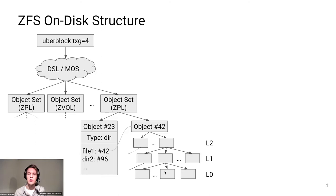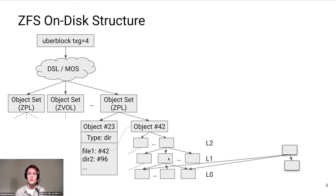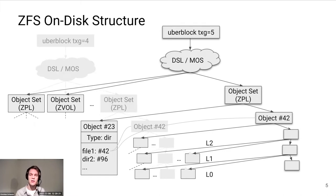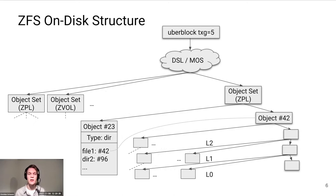As a concrete example, if you modify a level zero block, we actually allocate a new level zero block that contains our changes, and then we modify the block pointer for that block in the parent level one indirect block to point to that newly allocated block. We don't modify that block in place, but create a copy, reusing most block pointers except for the one we just modified. This goes on up to the uber block, and once the new uber block has been written, it becomes the new root of the on-disk tree structure, and parts of the old tree become obsolete.